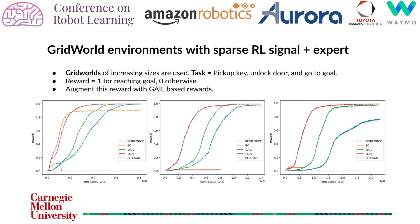We also see the effect of using expert trajectories with a sparse signal in a grid world environment. The total reward is the sum of the environment and discriminator reward for all GAIL-based methods. As the size of the grid increases, the behavior cloning baseline performs poorly and our method performs consistently well compared to other baselines. The red curve is our method.